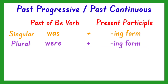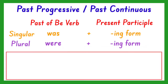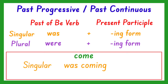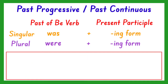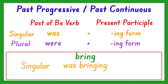Let's have some examples. For the verb come, its past progressive or past continuous form is was coming if the subject is singular or only one, and were coming if the subject is plural or more than one. How about bring? Its past progressive form is was bringing for singular subject, and were bringing for plural subject.